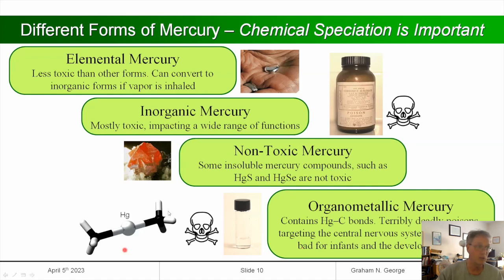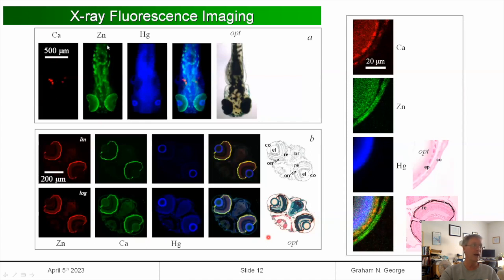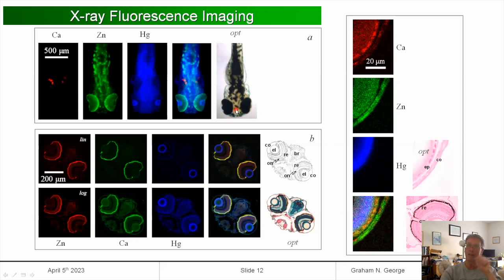How can X-rays help? We can use X-ray absorption spectroscopy as a fingerprint of the chemical form, and also do X-ray fluorescence imaging, where we take a tiny beam and raster scan it across the sample. Here's an example from an old study where we took a living zebrafish and rapidly scanned it — showing calcium in red, zinc in green, and mercury in blue. You can see the mercury concentrated in the eye lenses. We have great beamlines at the Canadian Light Source for these experiments.